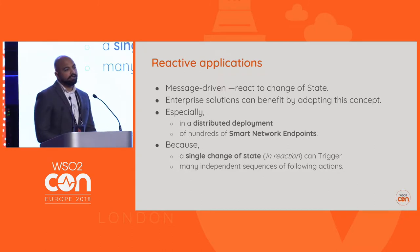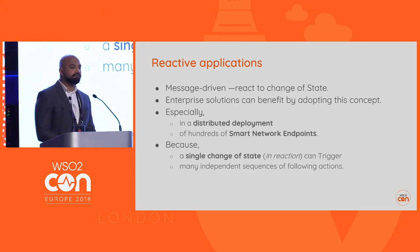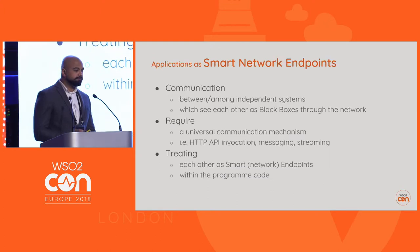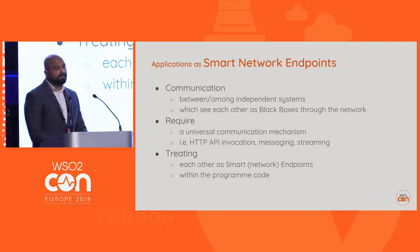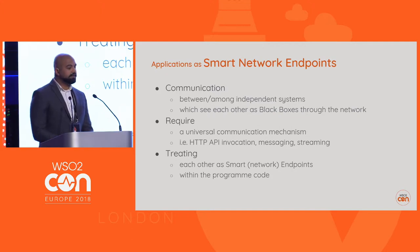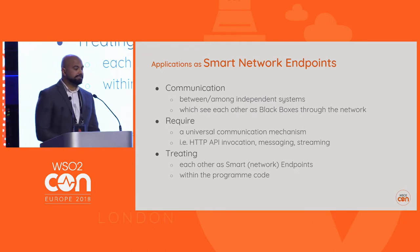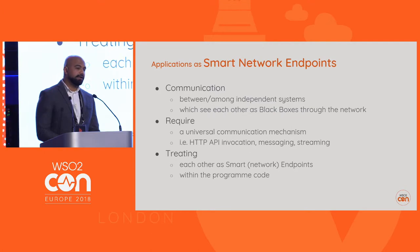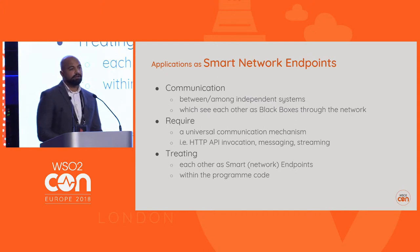You cannot follow an imperative design in a distributed deployment architecture because you would need to know everything about how these software components execute their actions, which is not practical. A single change of state can trigger many different sequences of following actions. This requires a universal communication mechanism such as HTTP-style API invocation, common messaging, or streaming APIs.